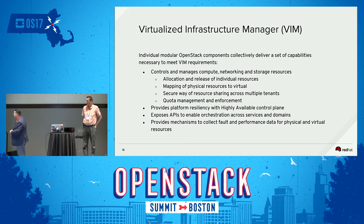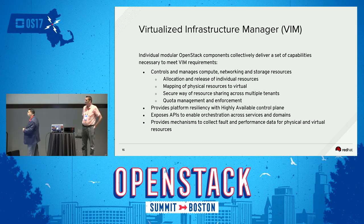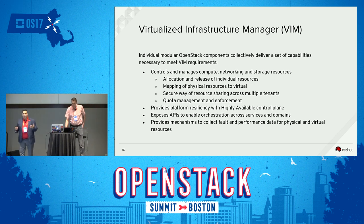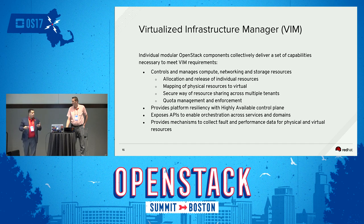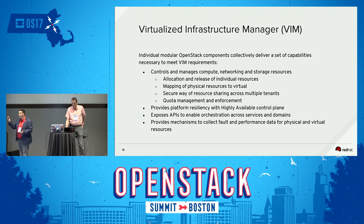With OpenStack as a VIM, you'll also have a resilient and highly available control plane. We take the approach of deploying a highly available control plane as the base for OpenStack. What happens if you lose your API? What is the impact of losing an API endpoint? That's why a resilient control plane is really important when deploying a VIM — not only for OpenStack, but for any other VIM in your telco or enterprise.